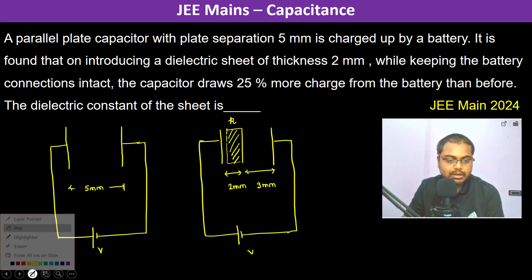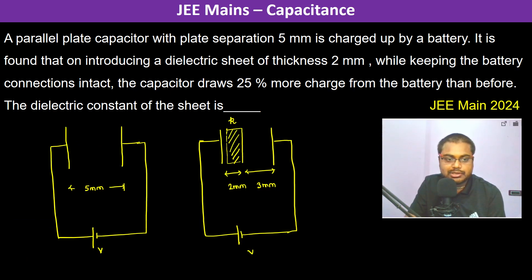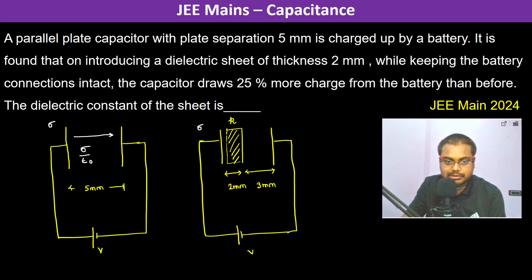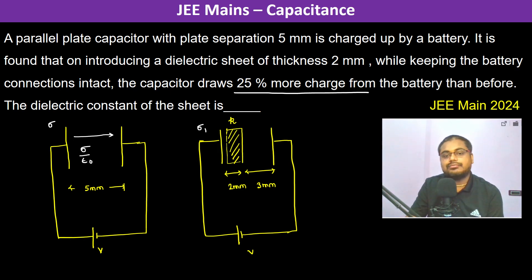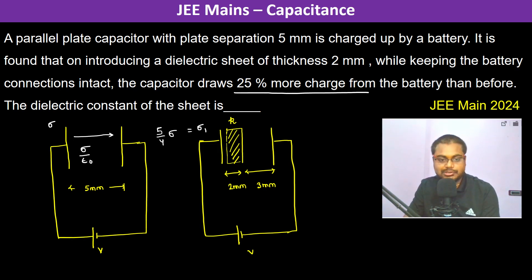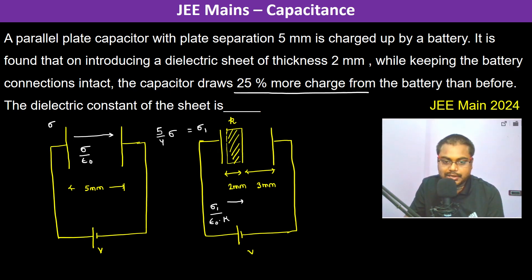Coming back to the problem: the original charge density was Sigma, so the electric field was Sigma divided by epsilon naught. The new charge density Sigma one is 25% more, so Sigma one equals five-fourths of Sigma. The electric field in the dielectric region becomes Sigma one divided by epsilon naught times K, and in the air region it becomes Sigma one divided by epsilon naught.